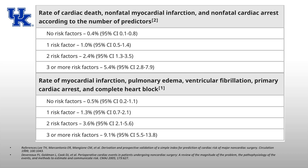When you think about the RCRI in practice, many patients have diabetes requiring insulin, have had a TIA, and are having high-risk surgery — right there that's three or more risk factors, and one in 20 or more of those patients is going to have a complication. It's important to understand why we care about all of this.